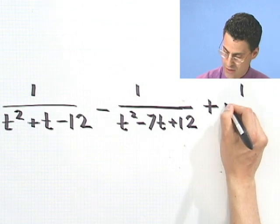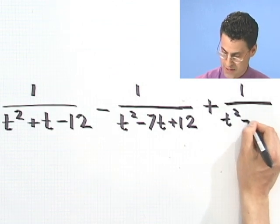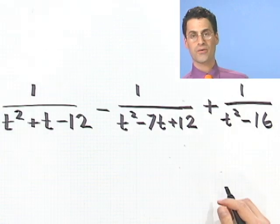Let's add on 1 over t squared minus 16. There you go.